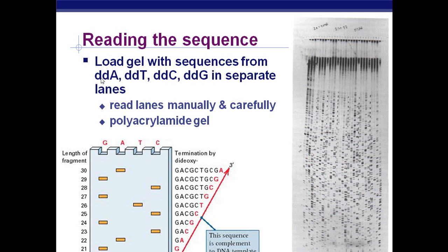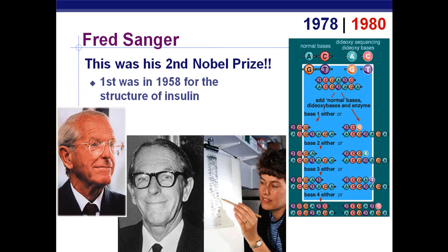Essentially, everywhere one of these fluoresced or labeled bases is added, it's going to stop the sequence. You get a series of short fragments, but because we know what the bases are, we can determine the actual sequence. This was developed by Fred Sanger — actually his second Nobel Prize, which is pretty impressive. His first was for discovering the structure of insulin back in 1958.